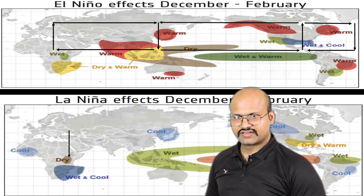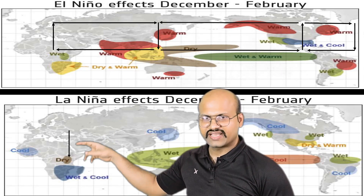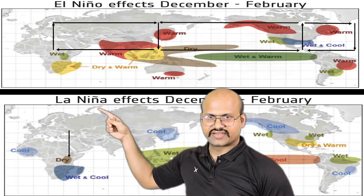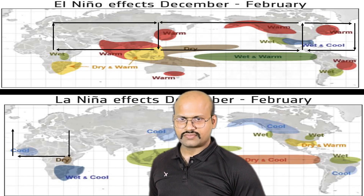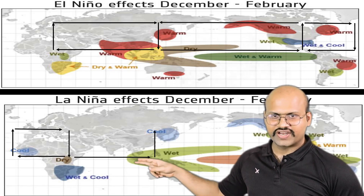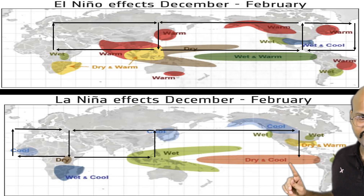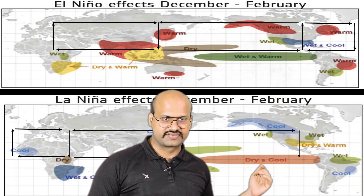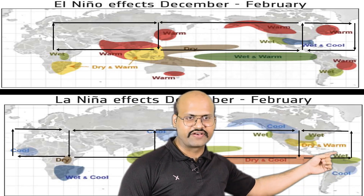Now let's see the La Niña effects. During La Niña, wind currents change and air descends over Africa, giving dry conditions since descending air does not bring rain. One branch then moves towards western Africa, rises up, and brings rain to that region. Another branch of the descending air moves towards Australia, rises up, and — having moved over the Indian Ocean — brings a lot of rain there. One branch of this ascending air moves towards South America and descends, causing dryness. Another branch moves towards western South America, rises up, and brings rain, giving wet conditions in that area.